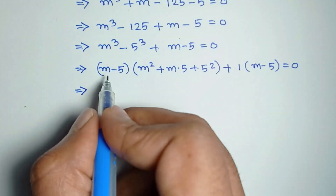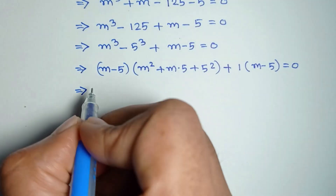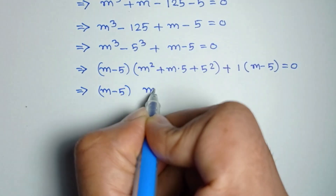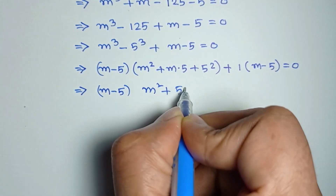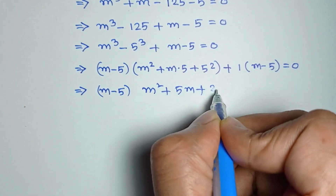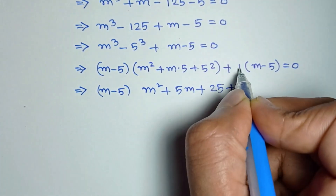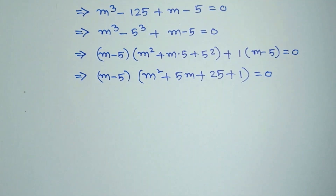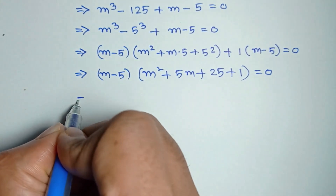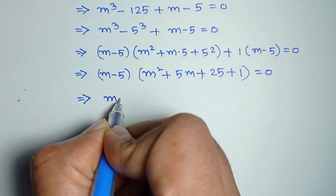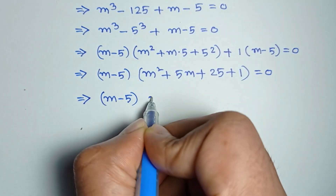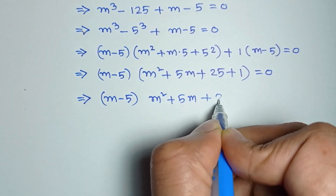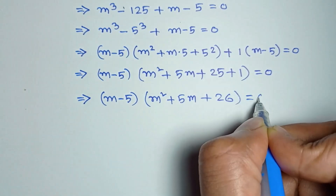Here m minus 5 is common, so factoring out gives m minus 5 times m squared plus 5m plus 25 plus 1, which simplifies to m minus 5 times m squared plus 5m plus 26 is equal to 0.